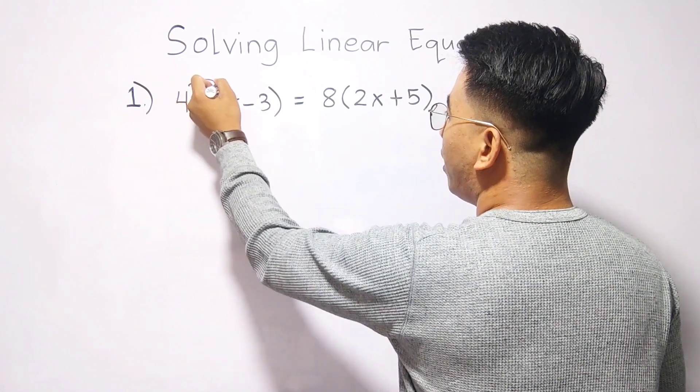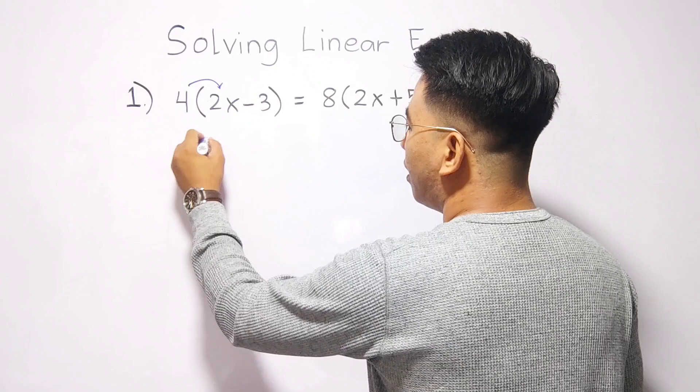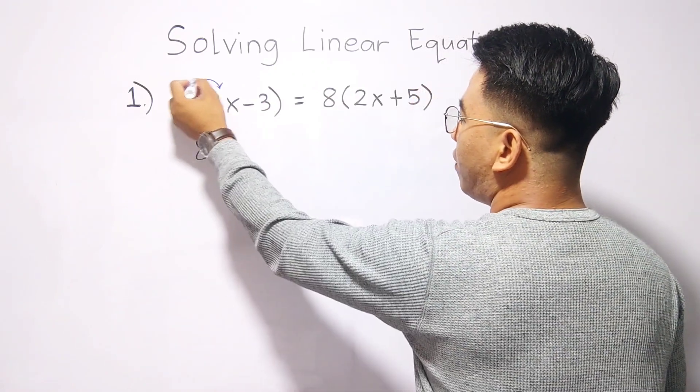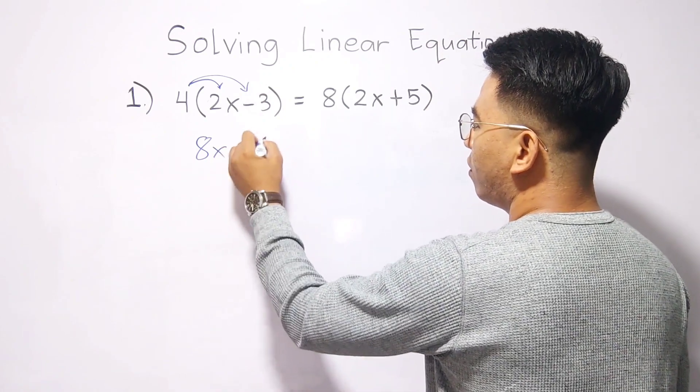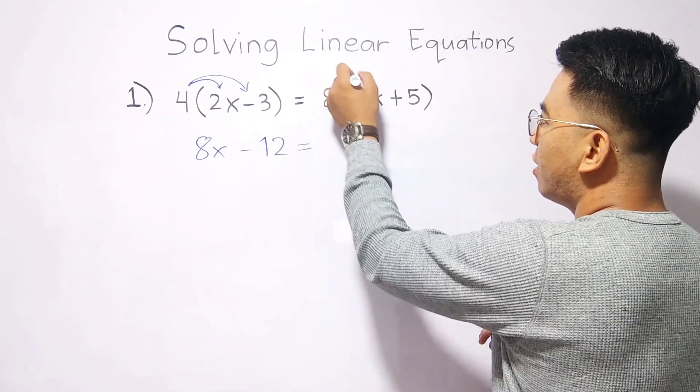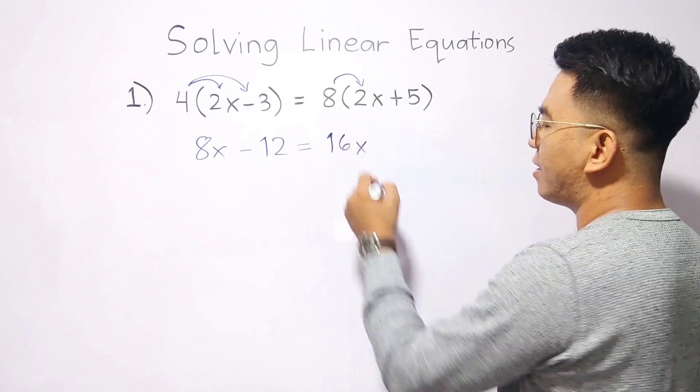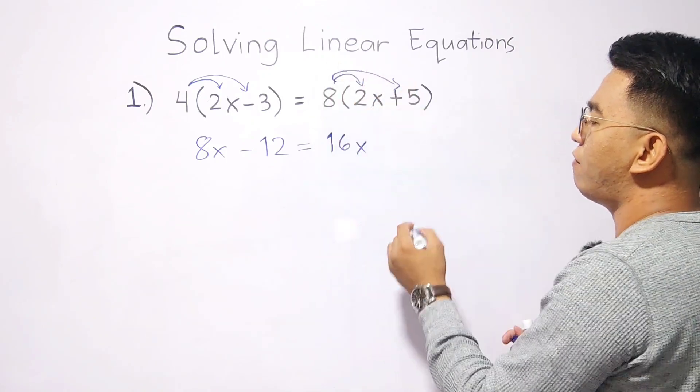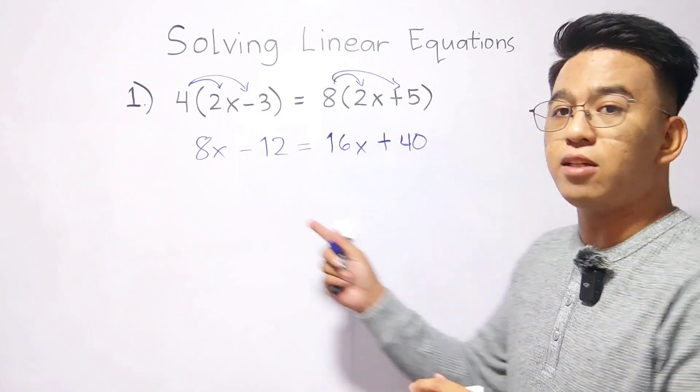We will multiply 4 and 2x, and it will give us the answer of 8x. Then 4 times negative 3, that is negative 12. On the other side, we have 8 times 2x, we have 16x. And this time, we have 8 times 5, that will be plus 40. Now as you can see, this is our new equation.